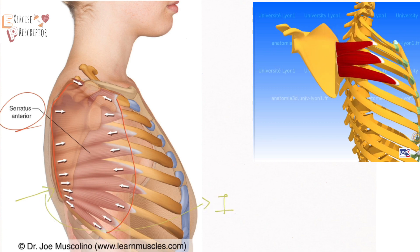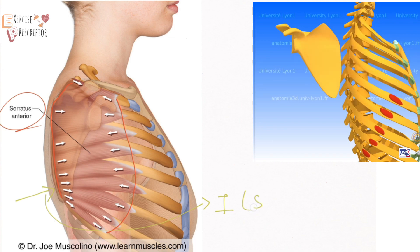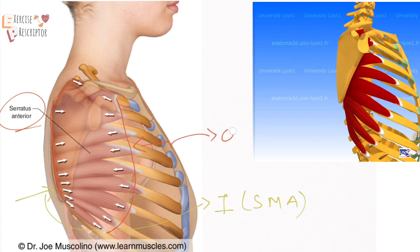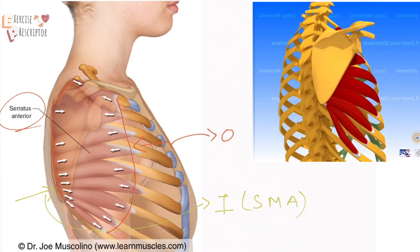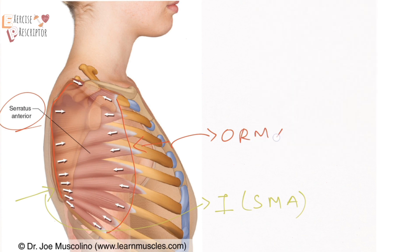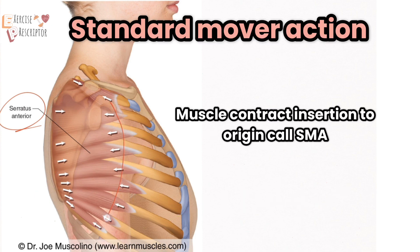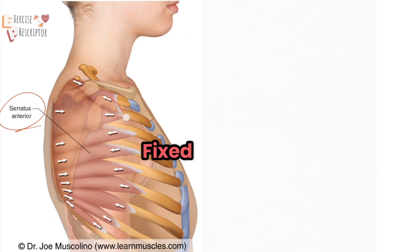The insertion is also called the standard mover action. The rib attachment is the more fixed attachment, so this attachment is called the origin, and this is also called the reverse mover action. Standard mover action means the origin is fixed and the insertion moves towards the origin.